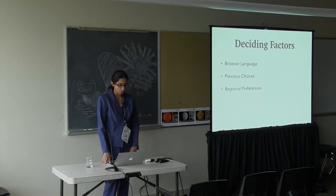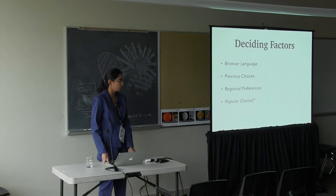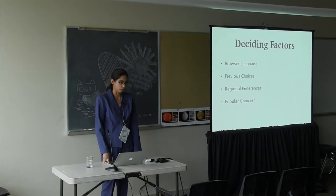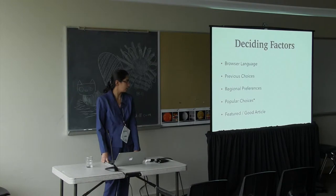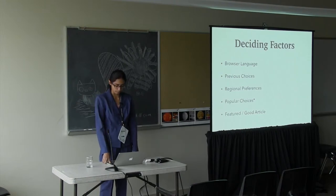After this, we have the popular choices. For example, if a given article is most popular in Russian language, the Russian language is supposed to be in the list. There's a star mark over there because this feature is yet to be implemented. Then we have featured article or good article. There are some articles which are marked as a featured or good article, so we try to incorporate those languages in the shorter list.